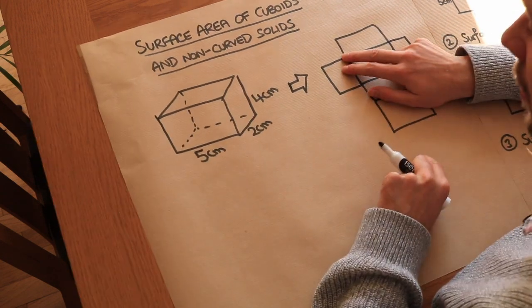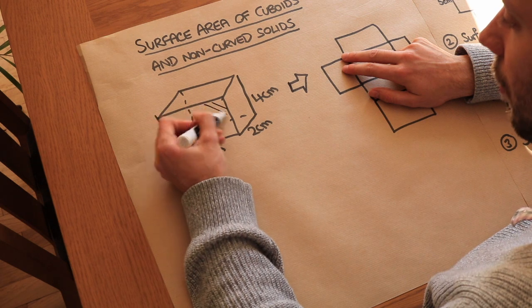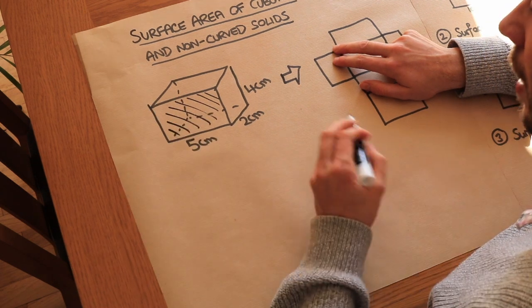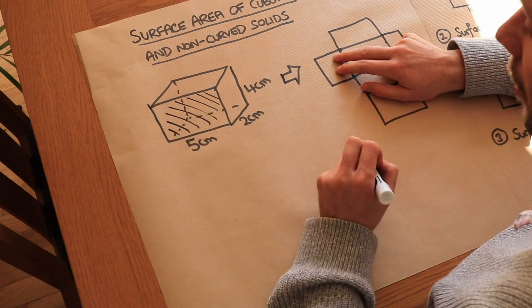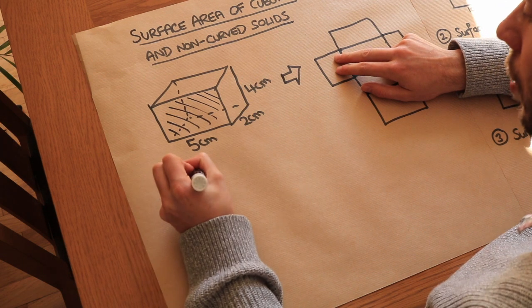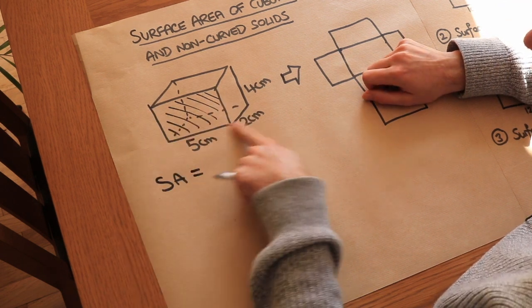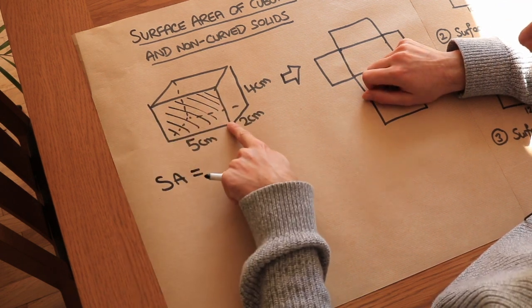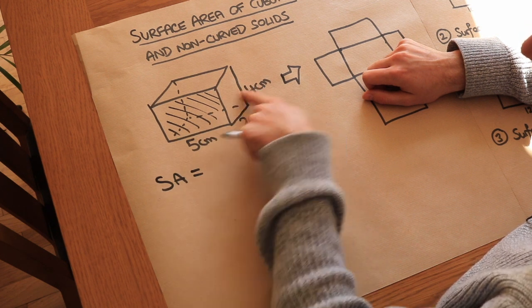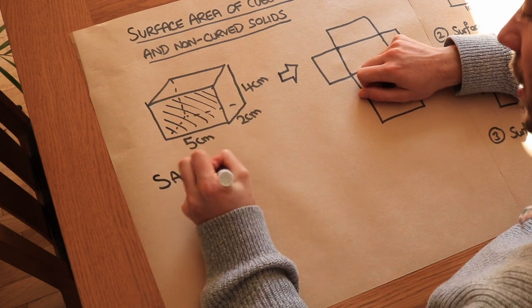Let's look at the different faces in turn. Taking the front face first: the surface area — SA for short — of that face is a rectangle, so it's just 5 (the width) times 4 (the height), which gives 20.